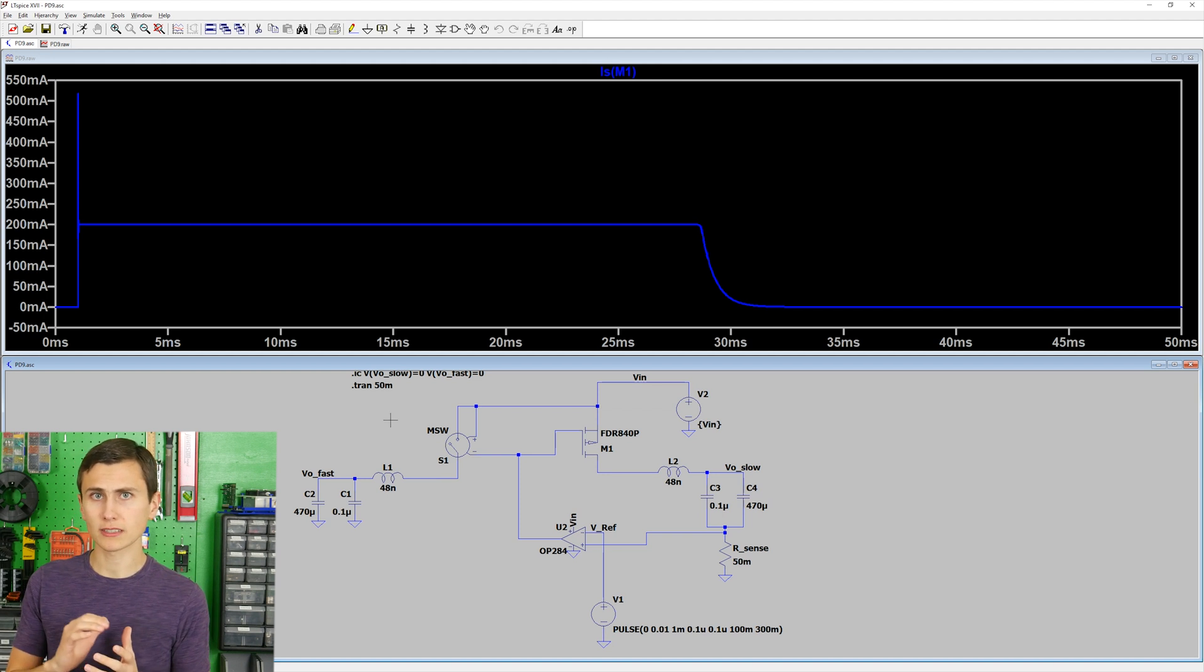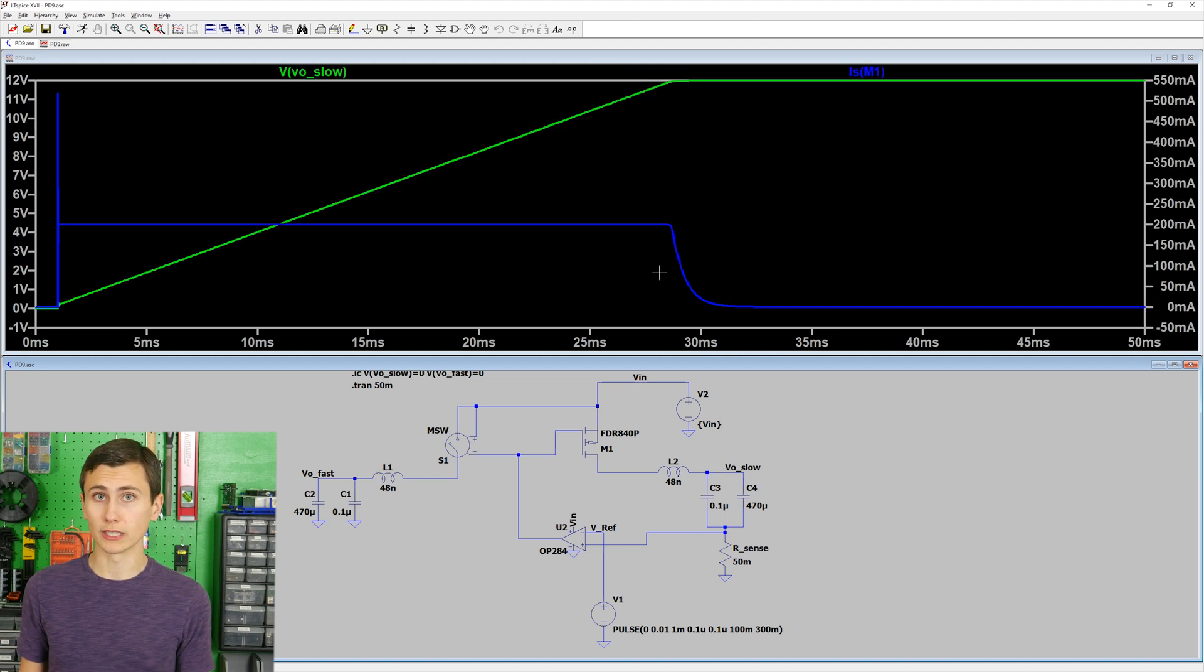This is charging the output capacitance more slowly until we've reached our desired voltage. And as we approach that final voltage, the output current tapers off, causing our op-amp to turn on the FET hard.